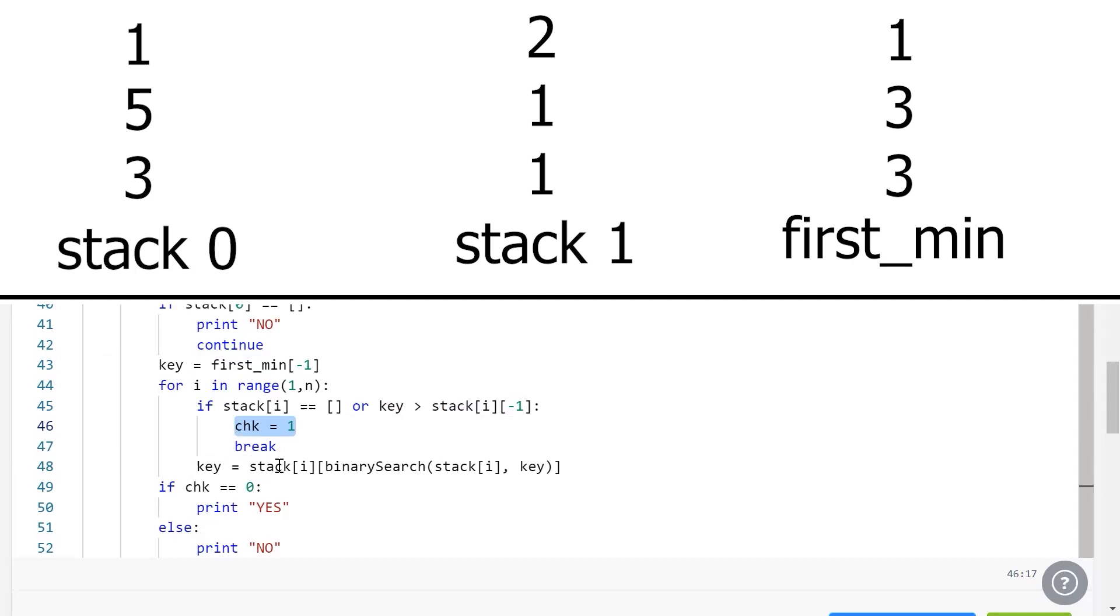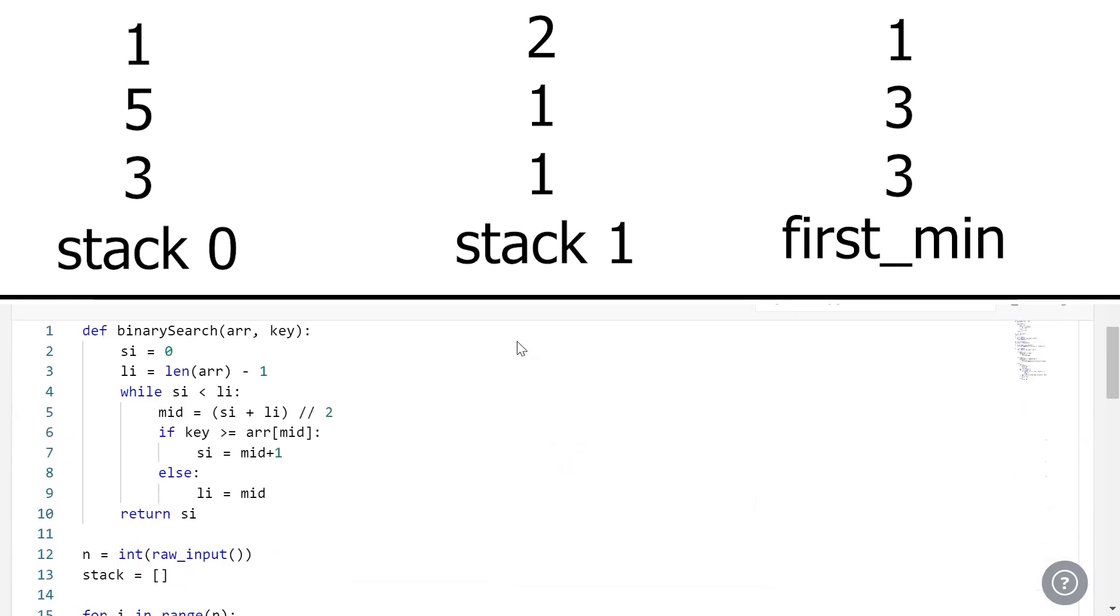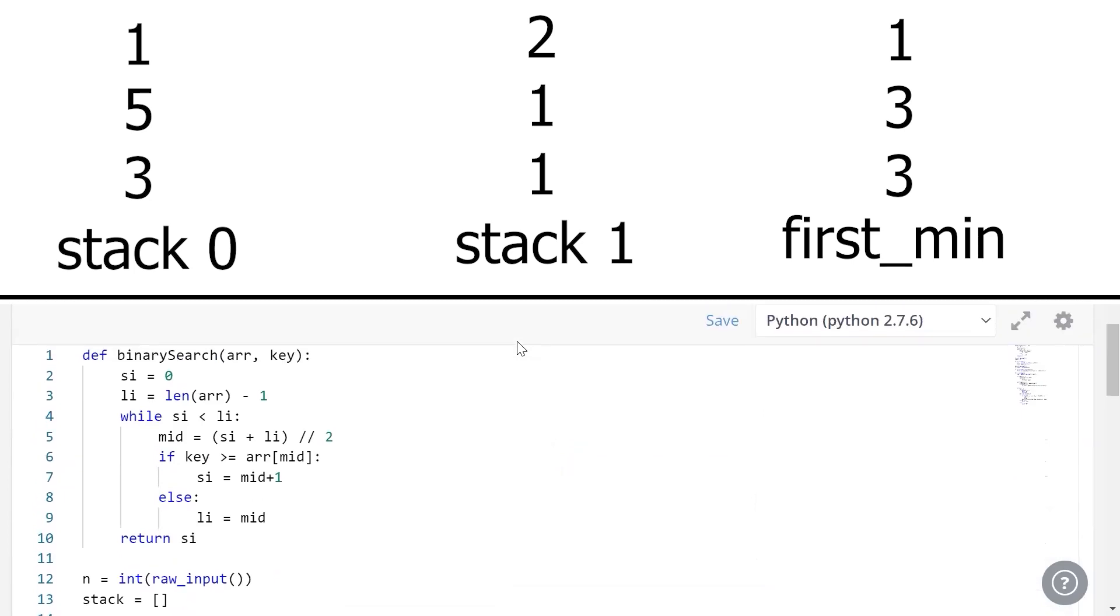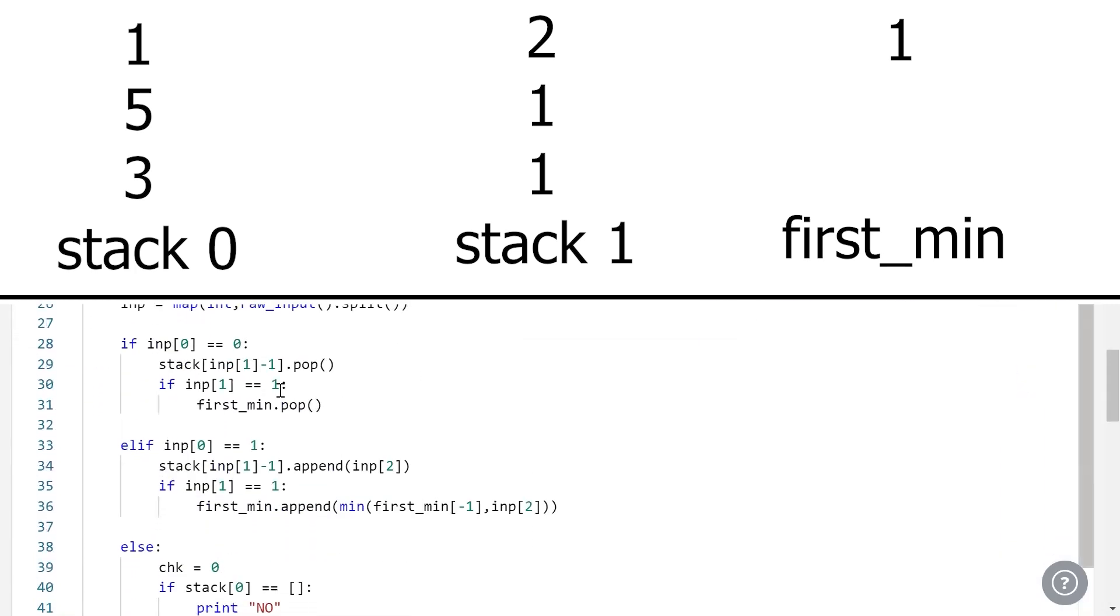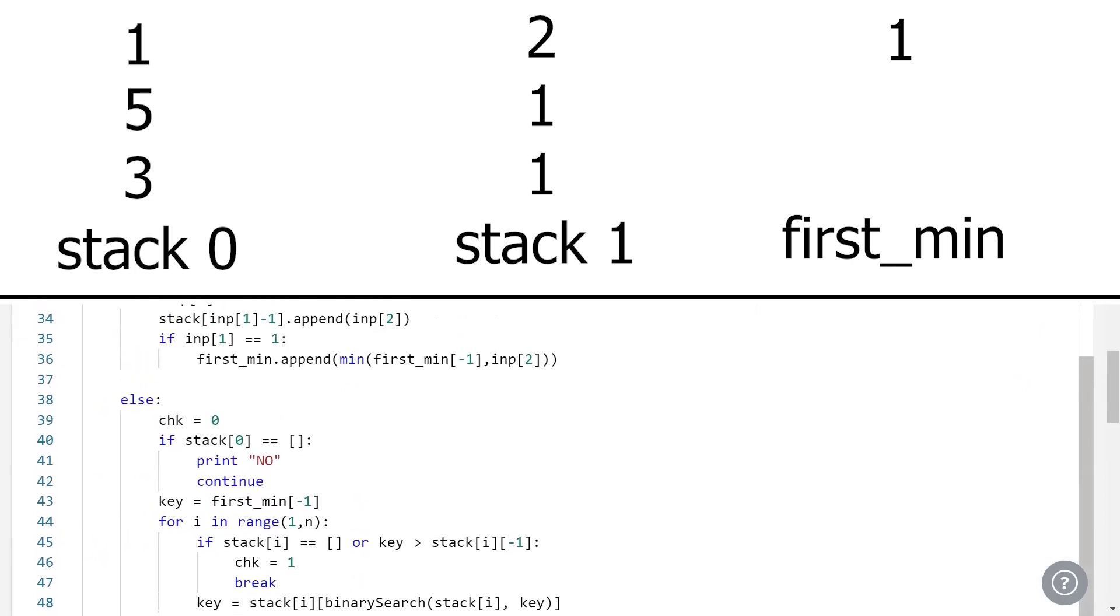If that's not the case, then we perform a binary search on stack of i with key as the key. We've seen the same binary search performed in most of the searching problems in CodeMonk. Let me reiterate what it does. Essentially, this binary search doesn't search for the element. It searches for the position that's just greater than that element. That's what this entire while loop does. At the end of this, SI lands on the location that's just greater than key, which is why we return SI.